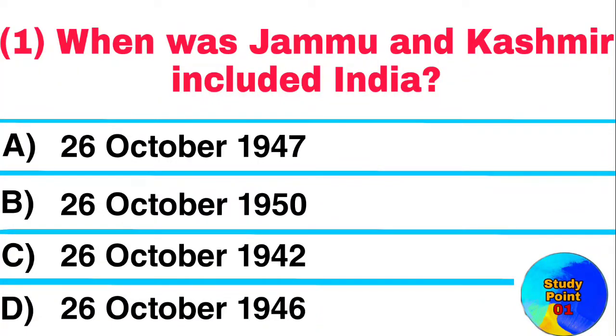Question: When was Jammu and Kashmir included in India? Answer: The 26th of October 1947.